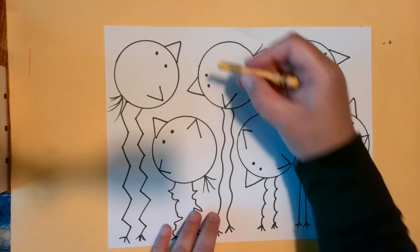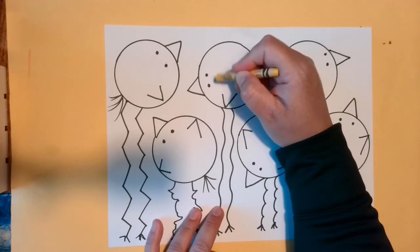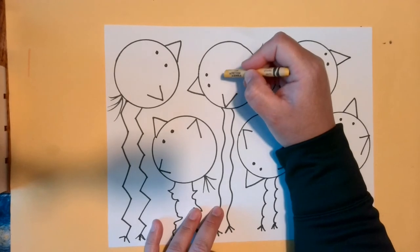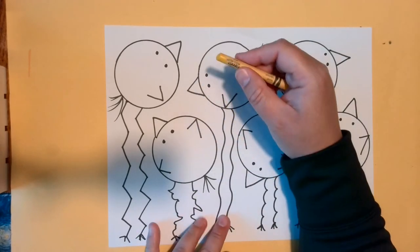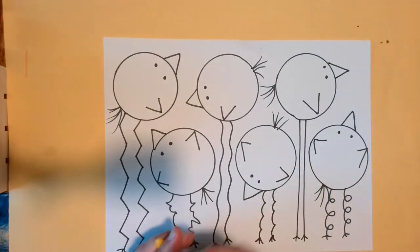I'll do my orange bird. Now the trick is don't push hard with your crayons. If you push hard, then they're not going to mix very well. So I'm going to take my red and I'm going to color really, really lightly.